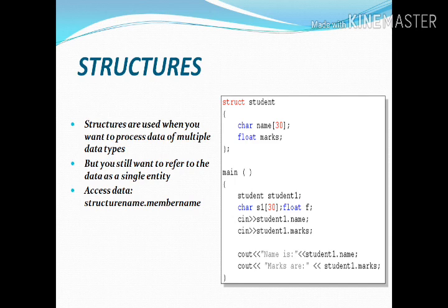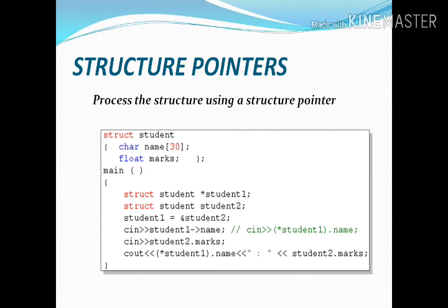Structure is a user-defined data type from the beginning. For the structure pointer example: struct student { char name[30]; float marks; } — if struct student *student1; struct student student2; — then student1 = &student2, meaning values of student2 will be stored in student1. When I enter name, marks and others, values will be stored in student1 and student2 this way.